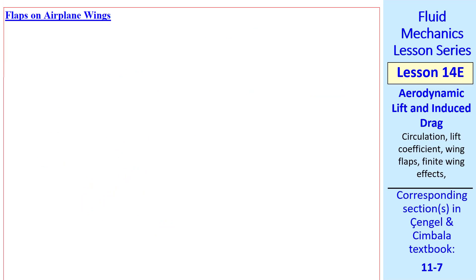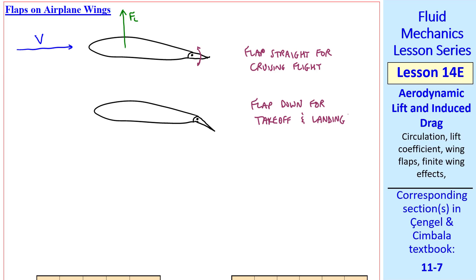Another way to increase lift is to add flaps on an airplane wing. A flap is kind of a small airfoil on the trailing part of the airfoil that can pivot up and down. The flap is straight like this for cruising flight, which is at high speed, and therefore provides sufficient lift to balance the airplane's weight at a steady altitude. The flap is down for takeoff and landing, where you're traveling at a much smaller speed, but you still must maintain enough lift to hold up the airplane.